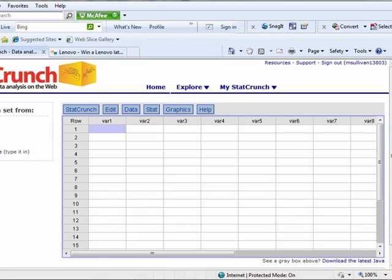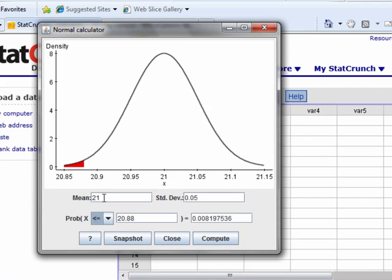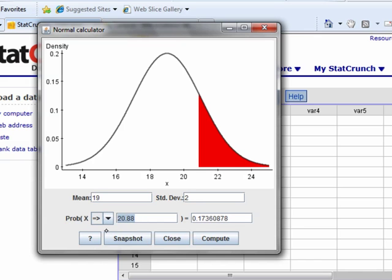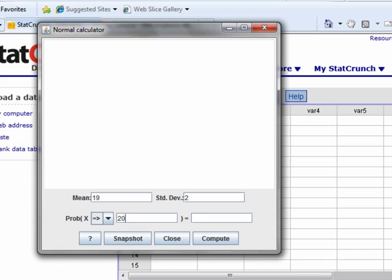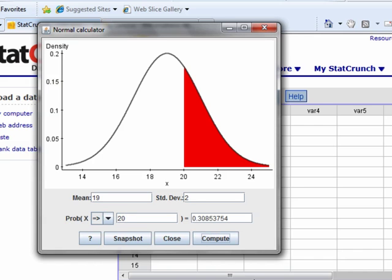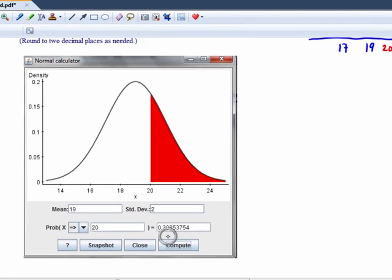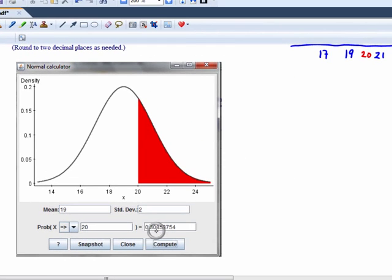There she is. Oh wait, I got my calculator right there. So the mean was 19. The standard deviation was 2. And we want to know the probability greater than 20. That's the same as the proportion greater than 20. Hit compute and we get our result. So my answer is 0.3085.